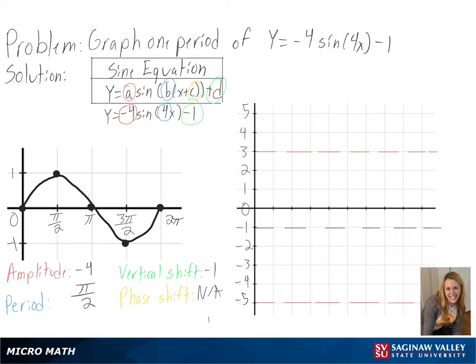We can also use our 4 to find our highest, middle, and lowest points by dividing each point on our original graph by 4. So we will start at 0, and then move up to pi over 8, through pi over 4, down to 3 pi over 8, and back up to pi over 2.